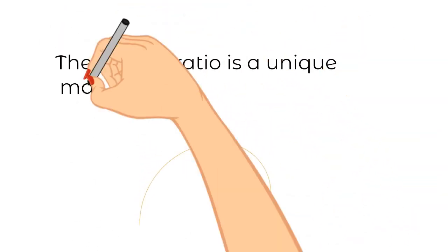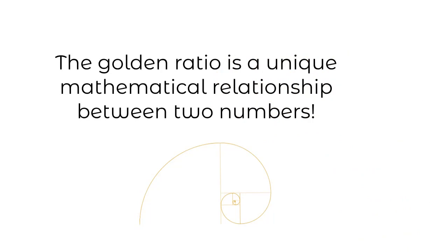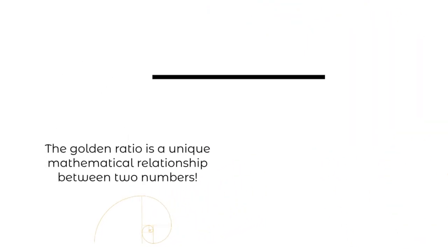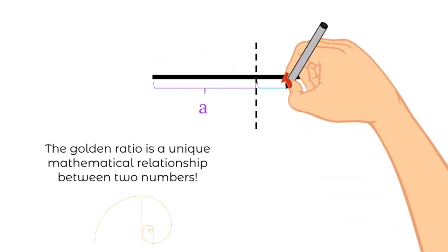The golden ratio is a unique mathematical relationship between two numbers and the best way to demonstrate these two numbers is to take a line and split it up just over halfway.